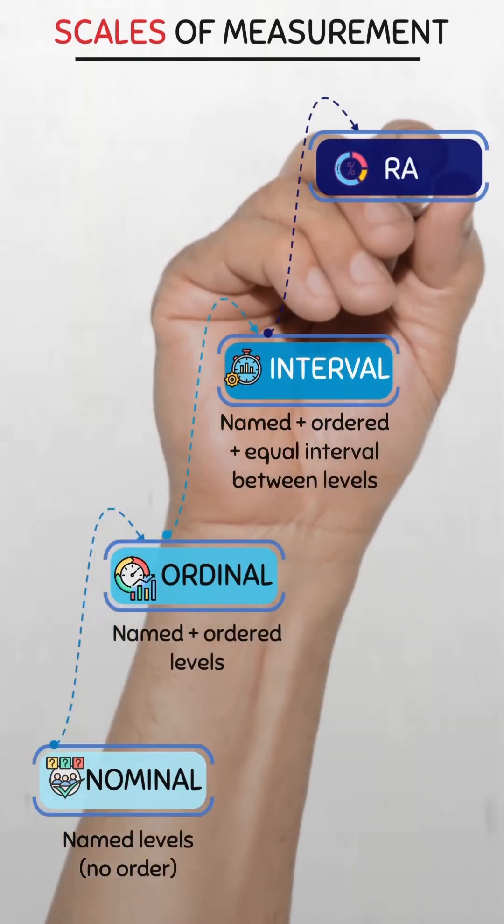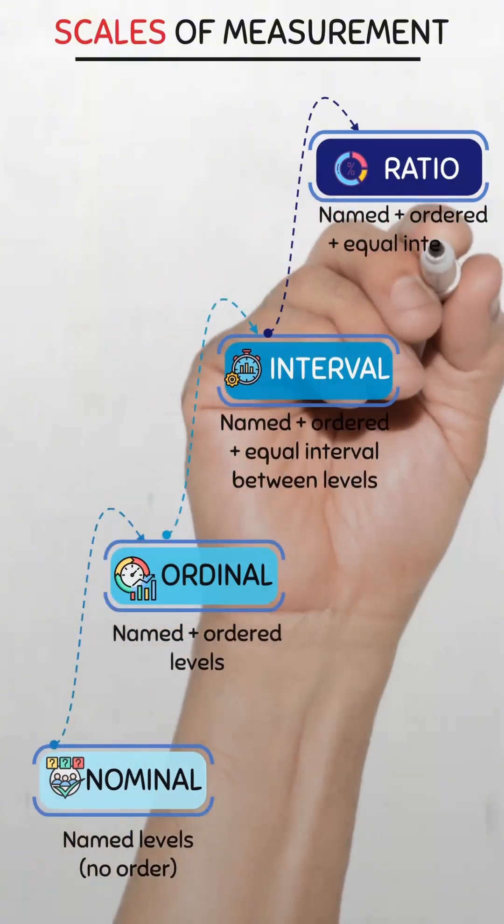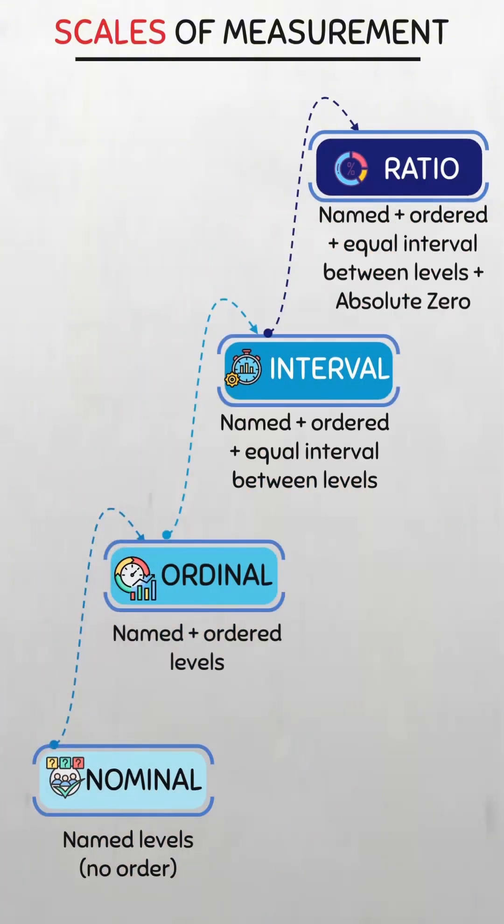And finally, ratio. Everything interval has plus an absolute zero, like the number of COVID-19 cases. Zero means no cases, and 20 cases is truly twice as many as 10. Understanding these scales helps us interpret public health data accurately.